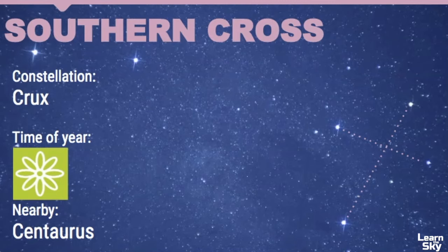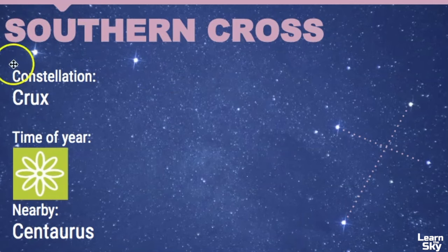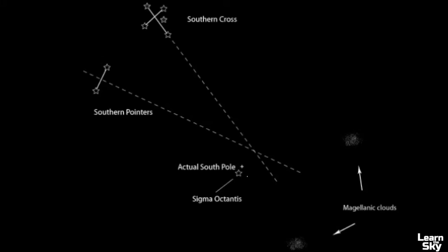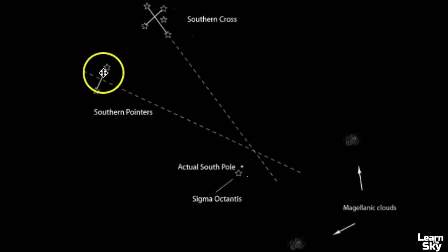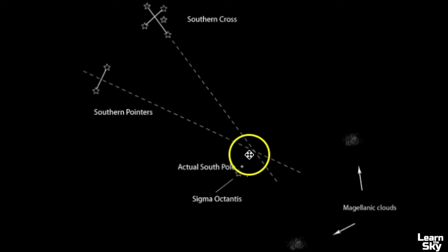I was really just so happy to find this constellation and then immediately noticed these two bright stars next to it — I was like, oh, that's where Alpha Centauri is. It's amazing that I've been viewing the sky for so many years and only recently found this. If you draw a line downwards from the Southern Cross and then draw lines from the Southern Pointers — those two stars — it lands really closely to the South Celestial Pole. So this is a great asterism to help you find the South Celestial Pole.